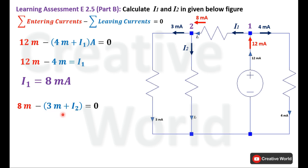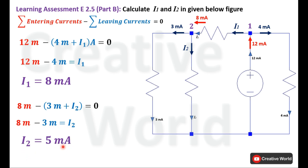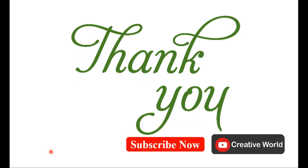To calculate I2, rearrange the equation by taking I2 to the other side of the equal sign. Adding the two currents gives us I2 equal to 5 mA. This concludes Chapter 2, Learning Assessment 2.5. Thank you, and see you again in the next video.